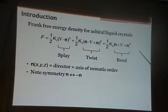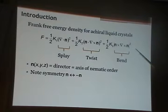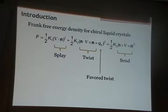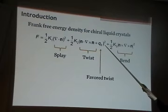Let's begin by thinking about the free energy density for achiral liquid crystals, which you've seen in multiple lectures so far this week. If we have chiral liquid crystals, then certainly there's a favored twist as I presented yesterday. When you think about an equation like this, you might notice there's something a little bit funny: there's a favored twist, but there isn't a favored splay or a favored bend.